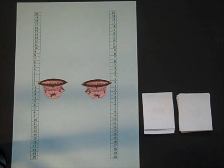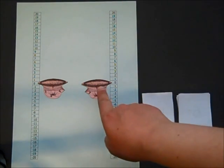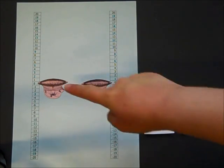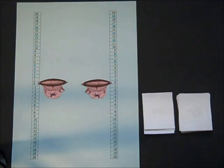I've got a new game to show you Charlie. We've each got a hot air balloon, that's yours, that's mine, and the playing board goes up to 20 and down to negative 20.